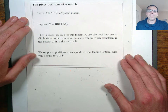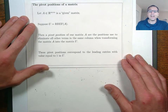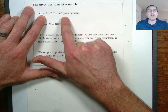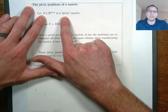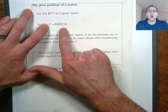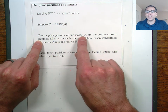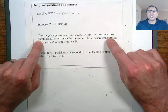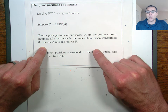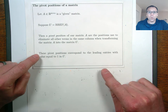The first definition we're going to talk about is something called a pivot position of the matrix A. If we have a matrix A, which is an m by n coming from a modeling context, and then we put A in RREF form, we say that the pivot positions of the matrix A are the positions used to eliminate all other terms in the same column while we're transforming A into the matrix U.